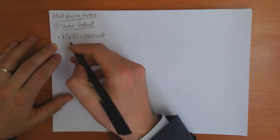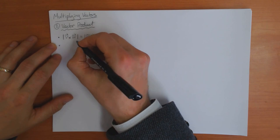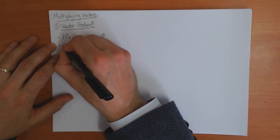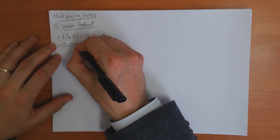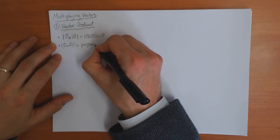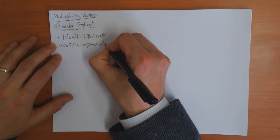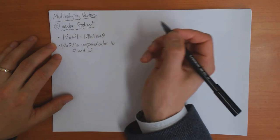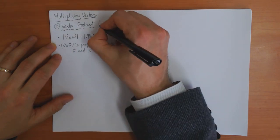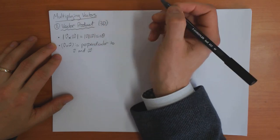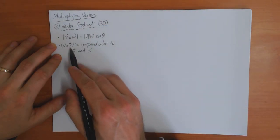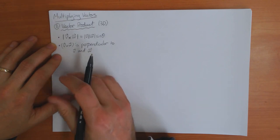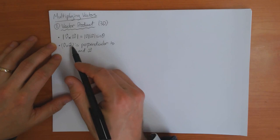Now I have to define the direction of the vector. The next statement is that the cross product v cross w is perpendicular to both v and w. An important thing about the vector product is it's only defined in three dimensions, because this way of specifying the direction is only uniquely well-defined in three dimensions.